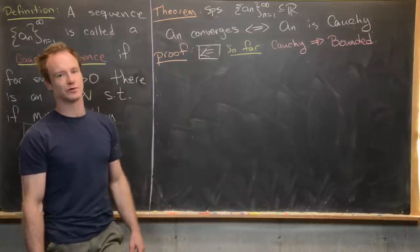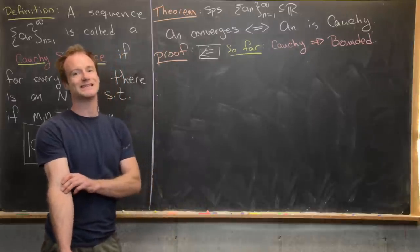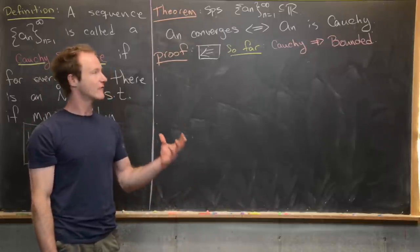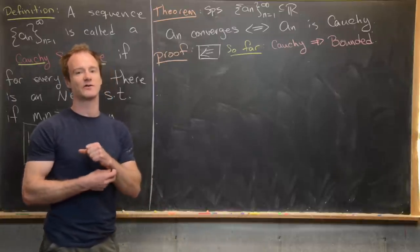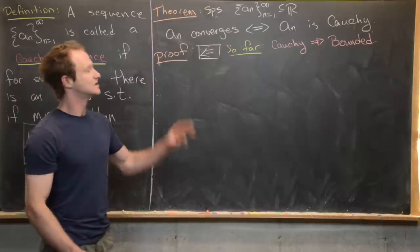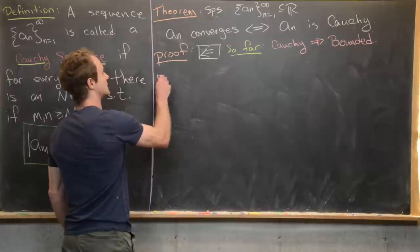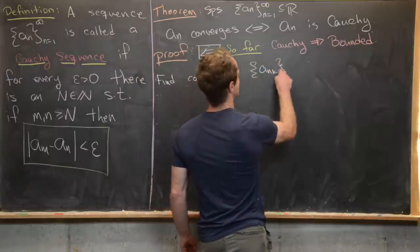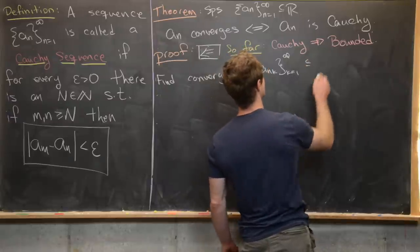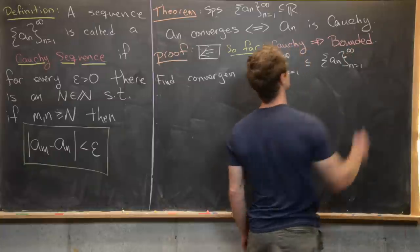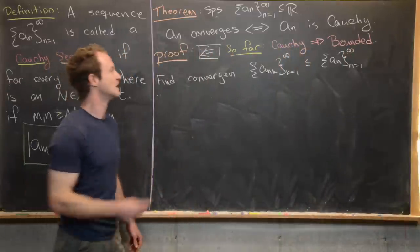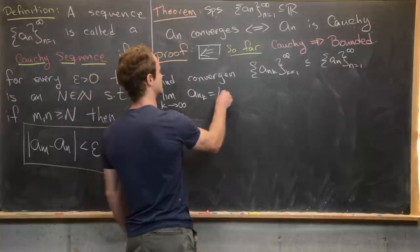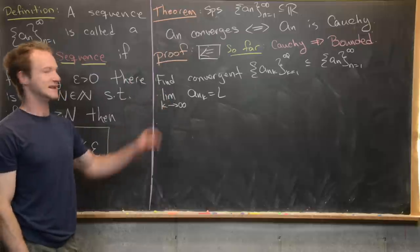Now we're ready to finish the reverse direction. We've proved that a Cauchy sequence is necessarily bounded. Recall from the last video that every bounded sequence necessarily has a convergent subsequence — that's the Bolzano-Weierstrass theorem. So let's find a convergent subsequence a_{n_k} (k from 1 to infinity), a subsequence of a_n, with limit as k → ∞ of a_{n_k} equal to l.